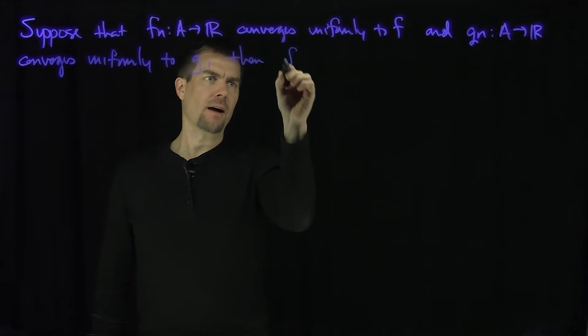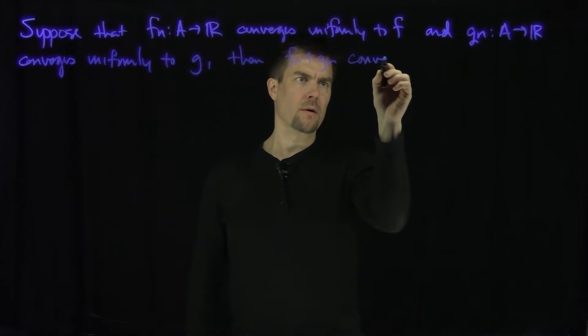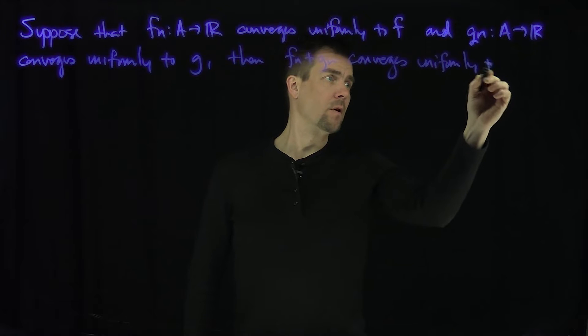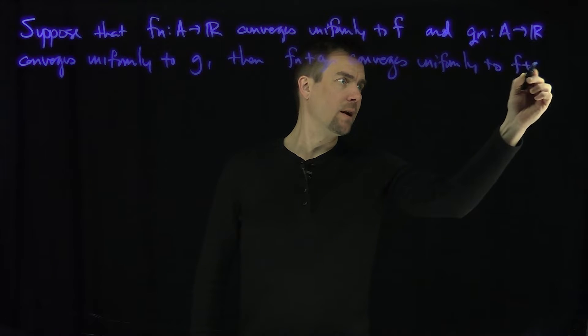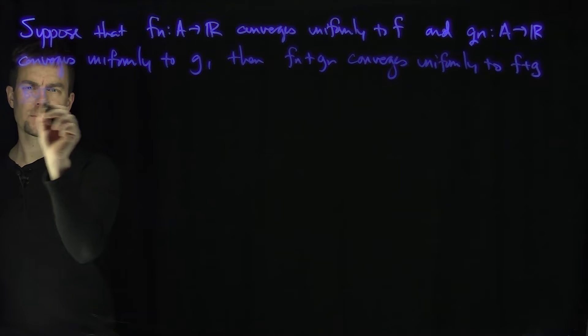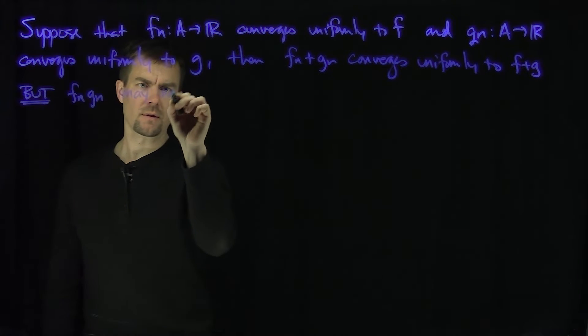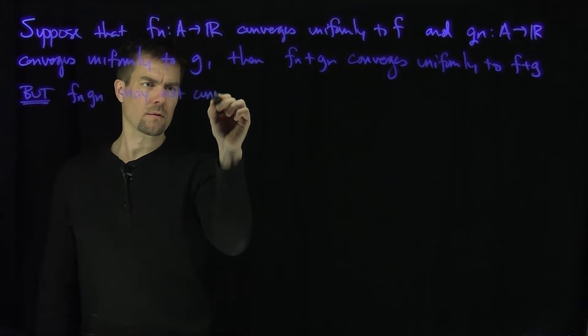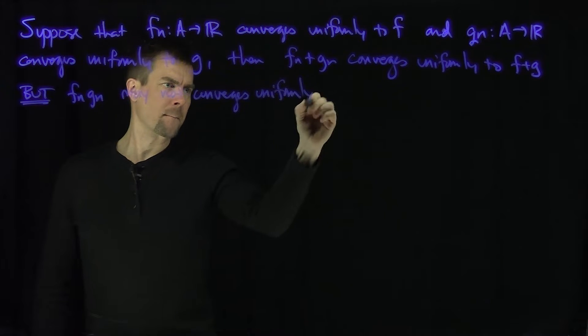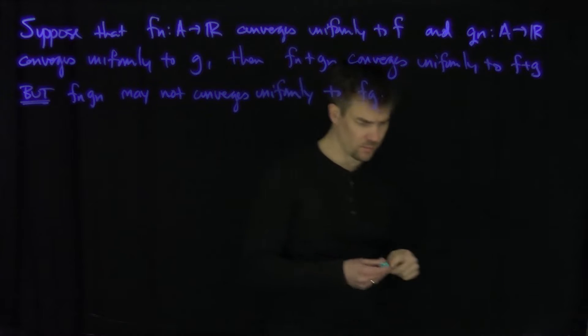Then Fn plus Gn converges uniformly to F plus G, but, and this is the key thing, Fn times Gn may not converge uniformly to F times G, even though it will do so pointwise.